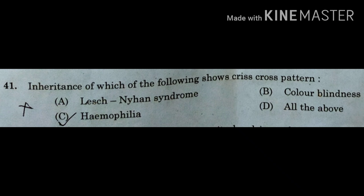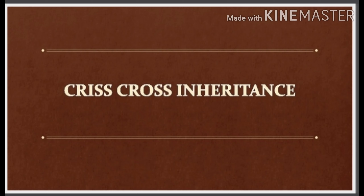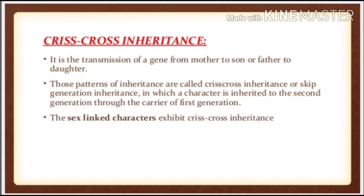Here is your question: The inheritance of which of the following shows Criss-Cross pattern? Option A: Lesch-Nyhan Syndrome, Option B: Colorblindness, Option C: Hemophilia, and Option D: All the above. Let us understand Criss-Cross inheritance in brief. What do you mean by inheritance? The phenomenon of transfer of characters from parents to offspring or young ones can be called as inheritance, and such characters are called as inherited characters. When is an inheritance said to be Criss-Cross inheritance? It should satisfy two criteria.